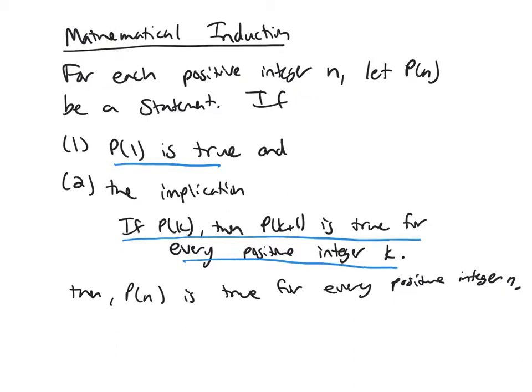And so what this implication is doing is it's creating a loop. Because P(1) is true, then P(2) would be true. But then because P(2) is true, then P(3) would be true and so forth. So this loop is showing us that this statement is always true because it's true for an initial value, and this loop is showing us that it will always be true.